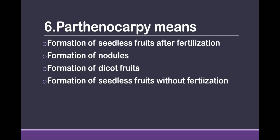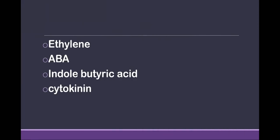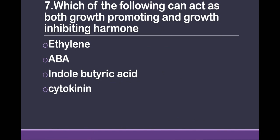Question 6: Parthenocarpy means — options are: formation of seedless fruits after fertilization, formation of nodules, formation of dicot fruits, or formation of seedless fruits without fertilization.